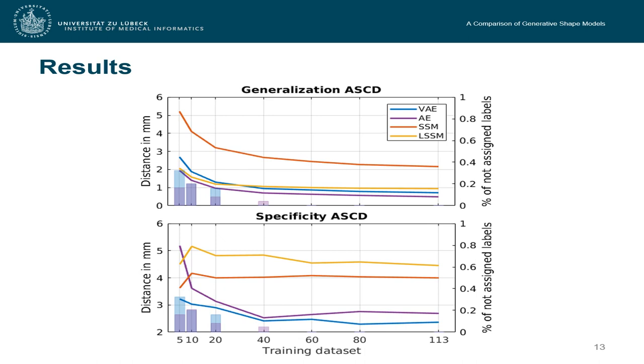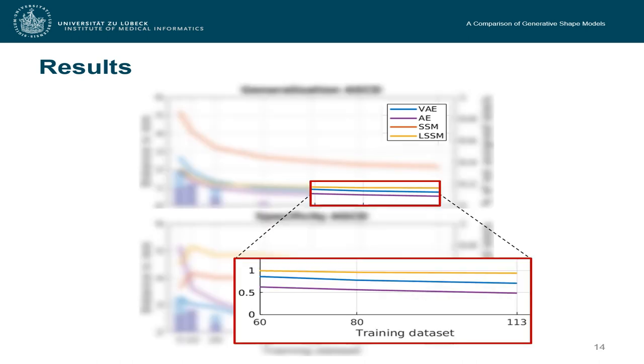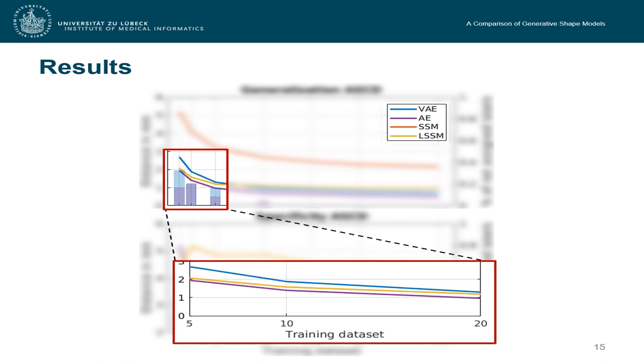And if we have a closer look at the larger training sets, we can see that the locality-based shape model is just a little bit worse than the deep learning methods, maybe half of a millimeter worse. And if we have a look at the smaller training dataset size, we see that those values are nearly the same.